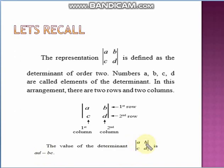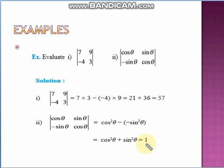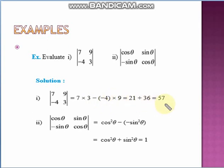Now some simple examples. First: evaluate the determinant with elements 7, 9, -4, 3. Using the formula AD minus BC: 7 into 3 minus (-4) into 9, which equals 21 plus 36, giving 57. So 57 is the value of the determinant.